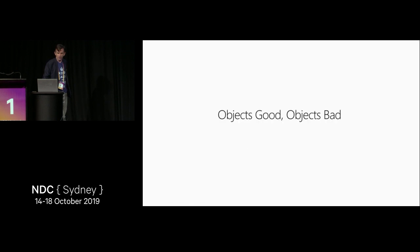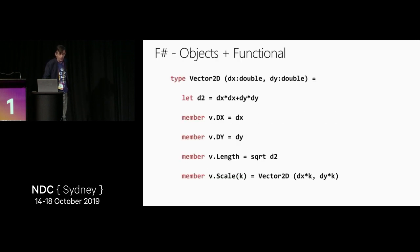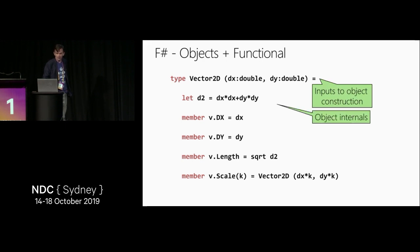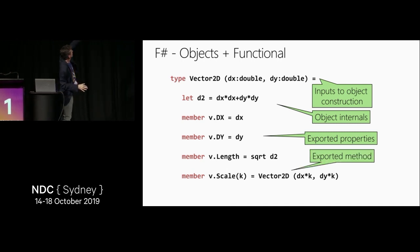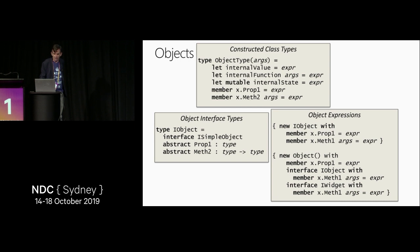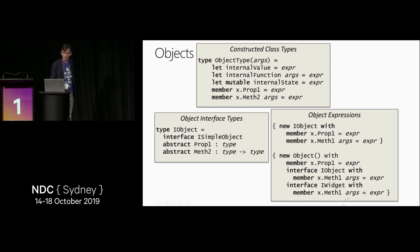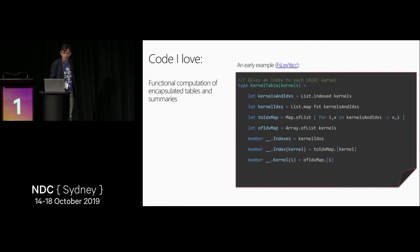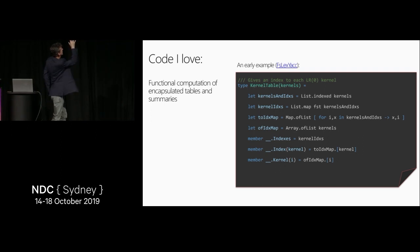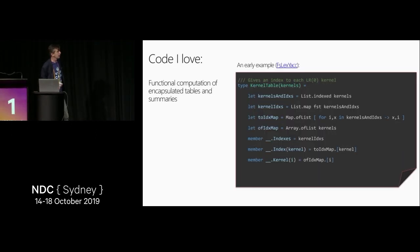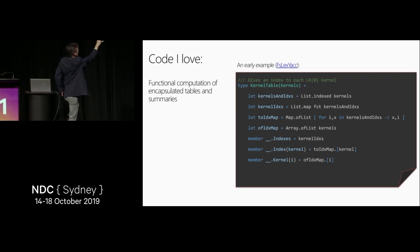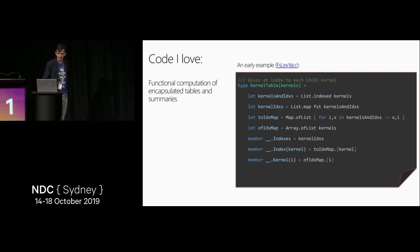F-sharp does support object-oriented programming. We have inputs, object internals, exported properties, and exported methods. This is a fully functional object — there's no actual state here; it's effectively just taking the inputs, getting some derived computation, and publishing those. The core features are class types, interface types, and object expressions. F-sharp object-oriented programming can be used well — functional computation encapsulated inside objects.